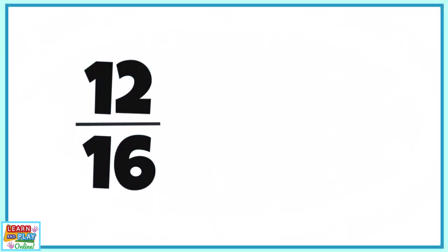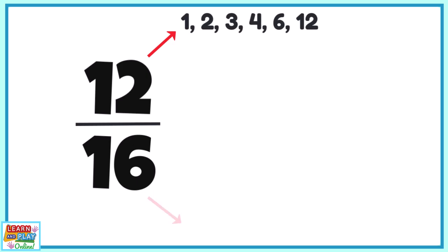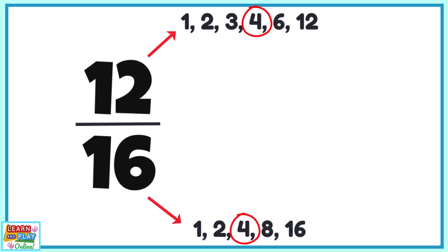If we are trying to simplify the fraction 12 over 16, we need to find the highest common factor. The factors for the numerator 12 are 1, 2, 3, 4, 6, and 12. The factors for the denominator 16 are 1, 2, 4, 8, and 16. Looking at the list of factors, we can see that the highest common factor is the number 4.